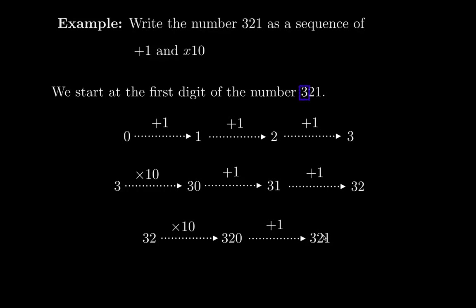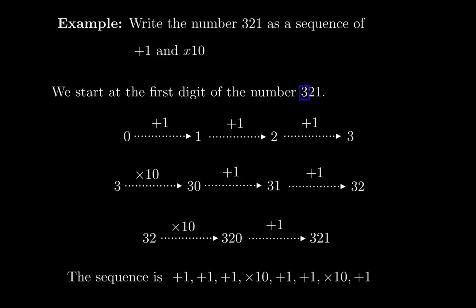Then we add 1 to produce the digit 1, giving us 321. The sequence of plus 1 and times 10 operations produced from this representation, in order, is: plus 1, plus 1, plus 1, times 10, plus 1, plus 1, times 10, plus 1. That sequence is going to produce a path on the automaton.